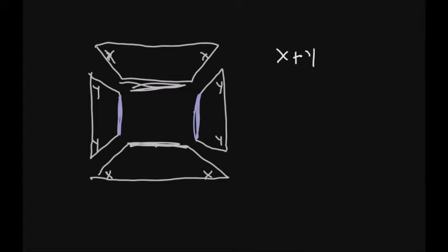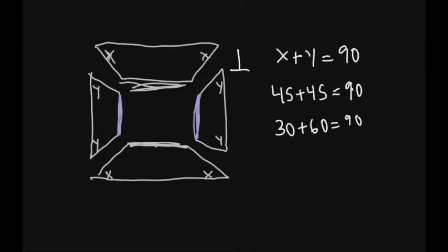So some examples of X plus Y equals 90: they could both be 45, so you can have a 45 and 45, and that's going to equal a 90 degree, so that would make perpendicular. Another common one would be 30 and 60, which adds up to 90. But really anything that adds up to 90—I mean, you could have a 50 and a 40. As long as it adds up to 90, it's going to create a perpendicular corner and it means your sides are going to be parallel with each other.